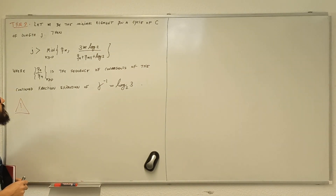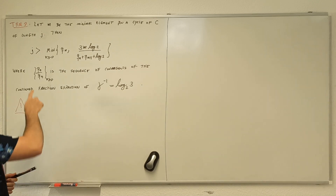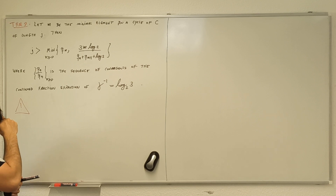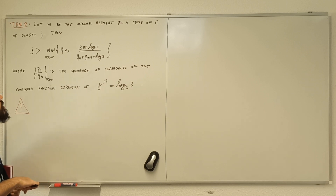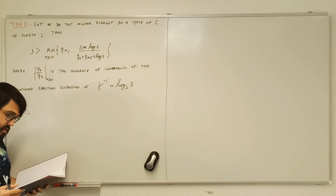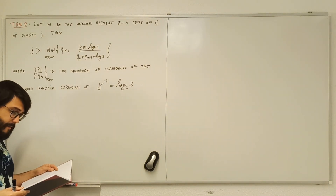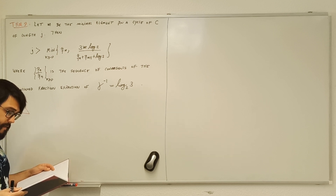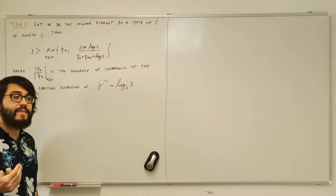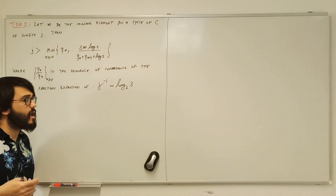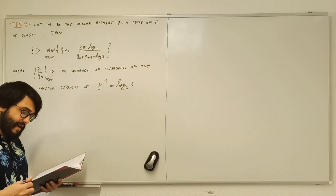Let me make an observation. This theorem is bounding from below the length of a cycle given the minimal element. One thing you can ask yourself: is there finitely many cycles of a given length? And the answer is yes.